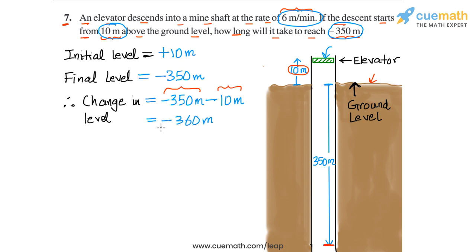So the change in level is minus 360 meters, which basically means that the elevator is going 360 meters in the downward direction. Now, what is the rate of change? The rate of change in the elevator's level is 6 meters per minute downward, which we can write as minus 6 meters per minute because the elevator is going down.